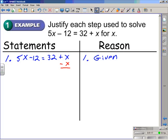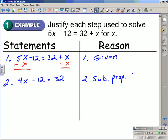So if you were to solve this, one way to start this would be by subtracting x from both sides, which would give the equivalent equation or the second statement, 4x minus 12 is equal to 32. Now the reason we were able to do that or the justification is the subtraction property of equality. That allows us to make that second statement or change the first statement into the second statement.